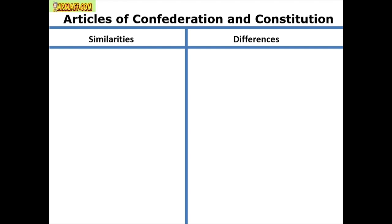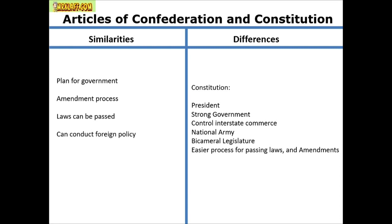The Articles of Confederation versus the Constitution: the Articles are weak — they had all the problems. The differences are easy: the Constitution has a president, strong government, controls interstate commerce, a national army (remember Shays' Rebellion under the Articles had no army to stop it), and a bicameral legislature as opposed to unicameral. Laws and amendments are also easier to pass. Similarities: both are a plan of government, laws can be passed, and foreign policy can be conducted — the Treaty of Paris came under the Articles.